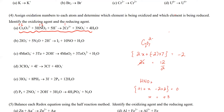Cr over here is plus 3 — that's already given. What is N in NO₃⁻? N is unknown, oxygen is minus 2 and there are three of them, and the total charge on the entire ion is minus 1. If I solve for X, it comes out to be equal to plus 5. So N in NO₃⁻ is plus 5.